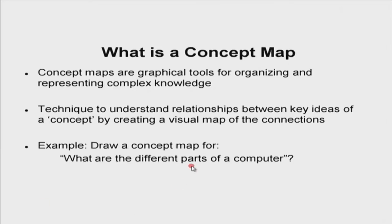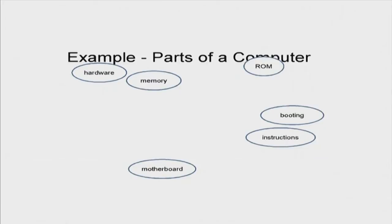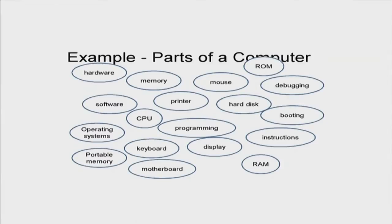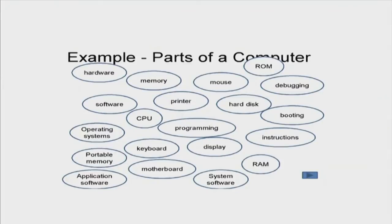When you say 'different parts of a computer,' you start by simply listing the ideas first, in any order: hardware, motherboard, booting, ROM, memory, instructions, CPU, operating systems, and so on. All these ideas are listed together — this is still not the concept map. These are just the various concepts which now have to be linked together. In the next step, we organize them. Right now they are unorganized; we need to arrange them.